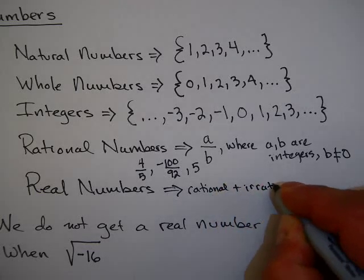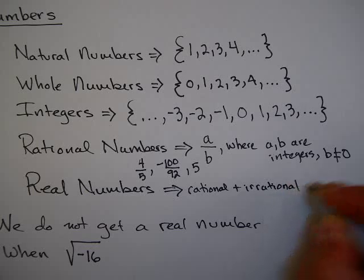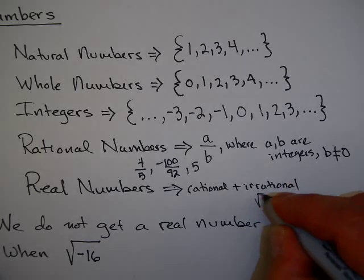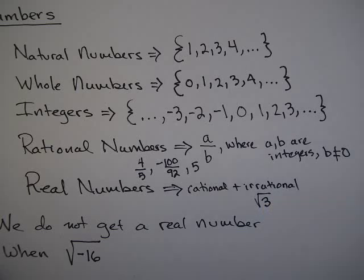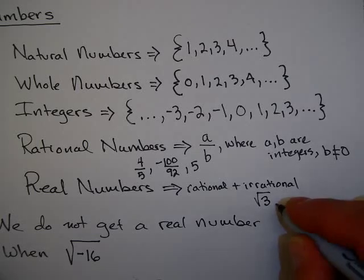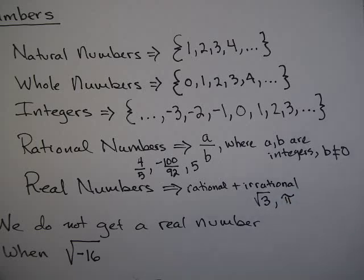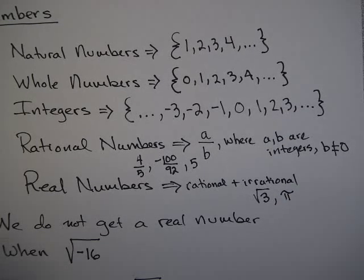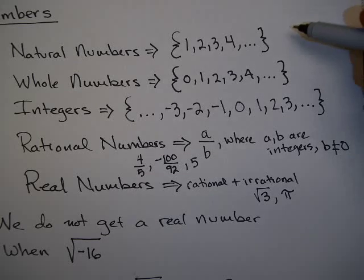Real numbers are the rational plus the irrational. You might remember from a previous section that irrational numbers are numbers that cannot be written as fractions, like the square root of 3, for example. The square root of 3 cannot be represented exactly as a fraction — it is a non-repeating, non-terminating decimal. There are some famous irrational numbers, like the number pi. The number pi is a decimal that does not repeat and does not terminate.